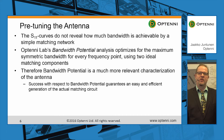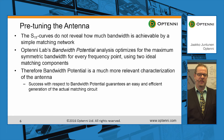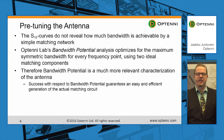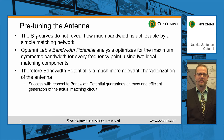However, the S11 curves do not reveal how much bandwidth would be available from this antenna if we apply a simple matching network. To analyze the real available bandwidth, Opteni Lab has a so-called bandwidth potential analysis, which optimizes for the maximum symmetric bandwidth for every frequency point. Behind the scenes it uses two ideal reactive components. Therefore the bandwidth potential is a much more relevant characterization of the antenna bandwidth. If we are successful with bandwidth potential analysis, we know in advance that matching will be an easy task.